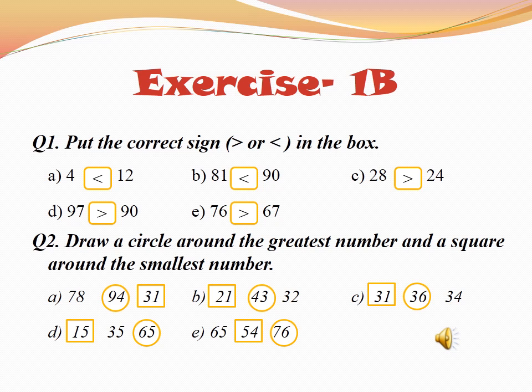Now move on to question number 2: draw a circle around the greatest number and a square around the smallest number. We are doing parts A to E, and the rest is your homework. In part A, we have 78, 94, and 31. We compare the tens digit of each number: 78 has 7, 94 has 9, and 31 has 3. So the greatest is 94 — draw a circle around 94. And the smallest is 31 — draw a square around 31.